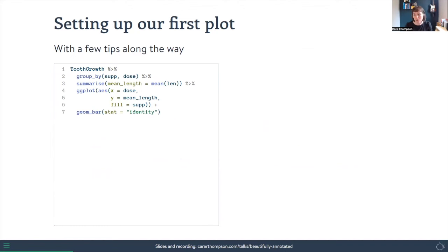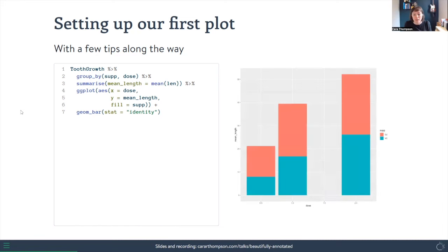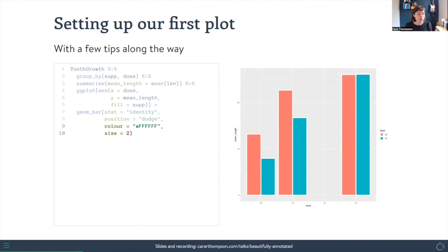Let's set up our first basic plot. We're going to pipe the data straight into ggplot, but first we'll summarize it. The guinea pigs were given either orange juice or vitamin C at different doses, and we're measuring tooth length growth. We'll group by supplement and dose, grab the mean length, and plot it — dose on the x-axis, mean length on the y-axis, coloured by supplement, using geom_bar. It doesn't make sense to stack the bars, so we'll add position_dodge to put them side by side and add a little white outline around the bars.